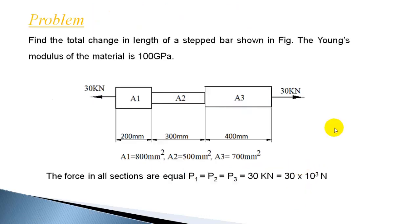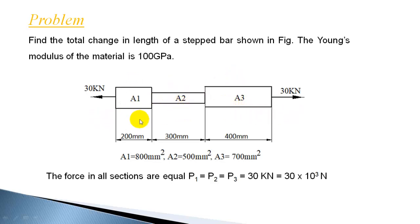Now let us work out a numerical example. We have to find out the total change in length of this step bar under the action of an axial pull of 30 kN. The bar is subjected to loads at the ends, so all sections have to withstand this axial load. Each section — first, second, and last — has to resist the same load of 30 kN. So P1, P2, P3 are all the same: 30 kN, which you convert to Newtons by multiplying by 10³.